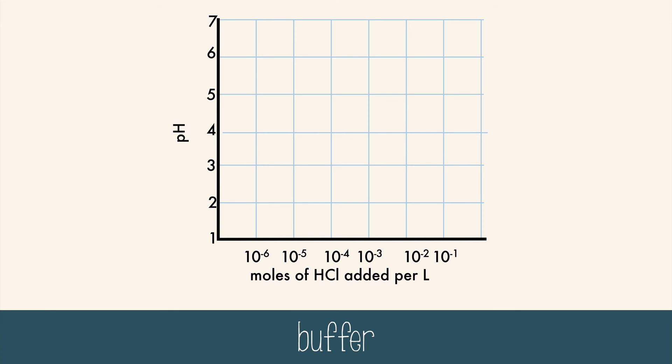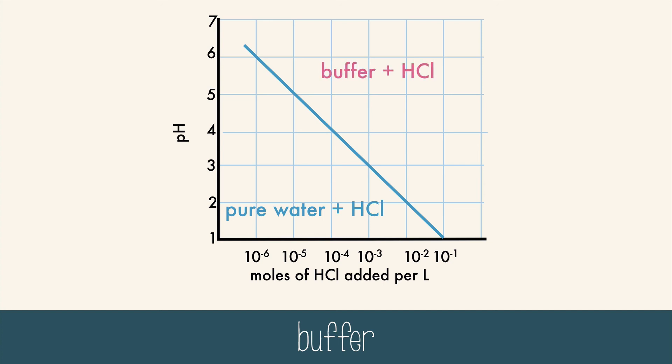It's easier to see what this means when we graph it. This graph shows what happens when more hydrochloric acid is added to pure water over time — the pH is steadily decreasing. But when we have a buffer solution and we add hydrochloric acid, the pH remains steady for a long time and then begins to change eventually, but nowhere near as drastically as with just water. Buffers keep pH steady, and this is very important for many living systems, like the pH of your blood.